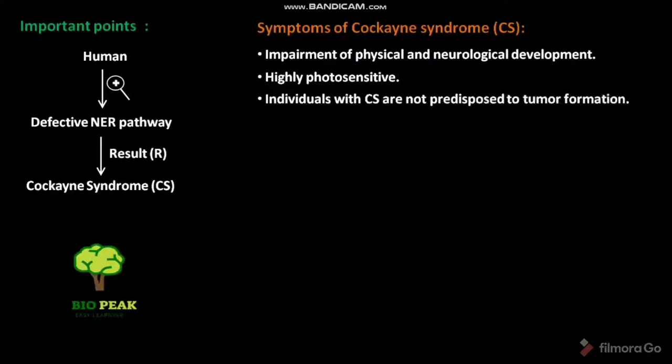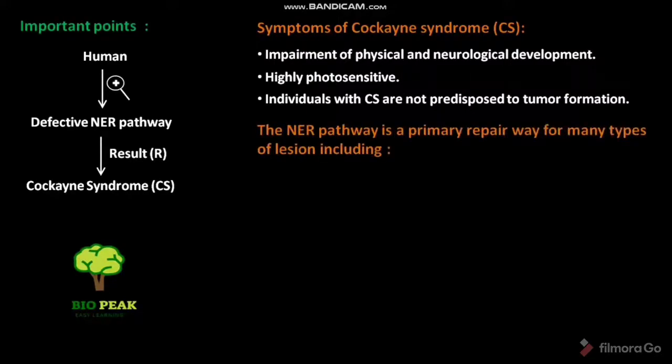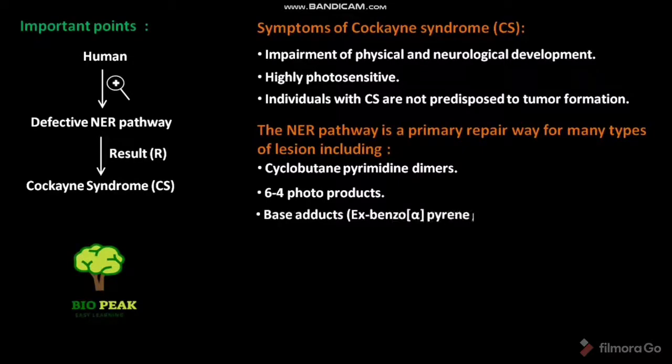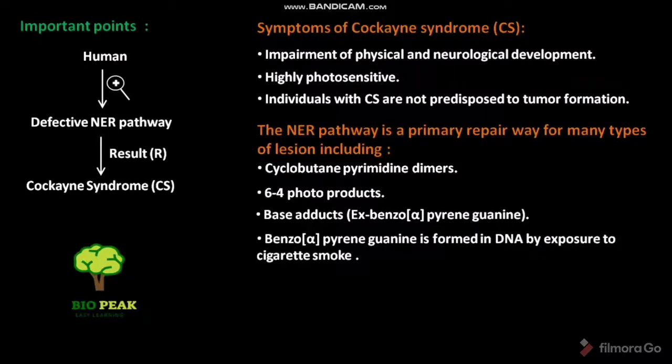Individuals with CS are not predisposed to tumor formation. The NER pathway is a primary repair way for many types of lesions including cyclobutane pyrimidine dimers, 6-4 photoproducts, and base adducts like benzo[a]pyrene guanine. Benzo[a]pyrene guanine is formed in DNA by exposure to cigarette smoke.